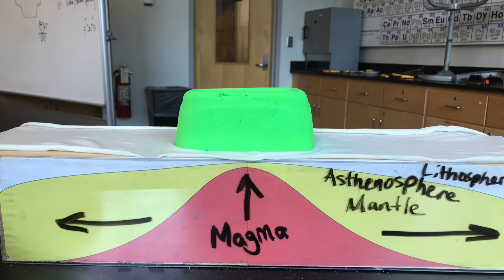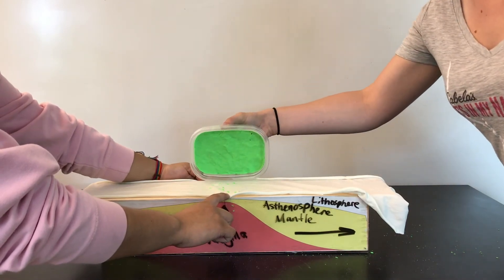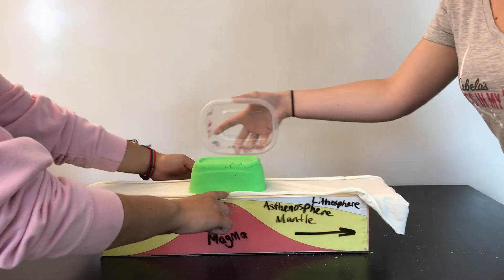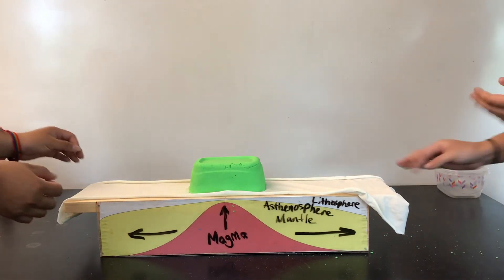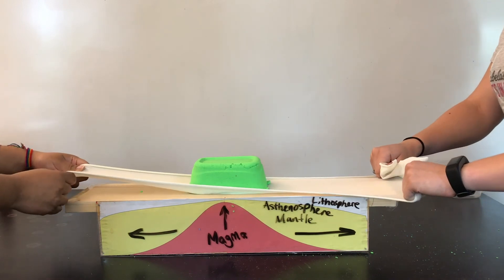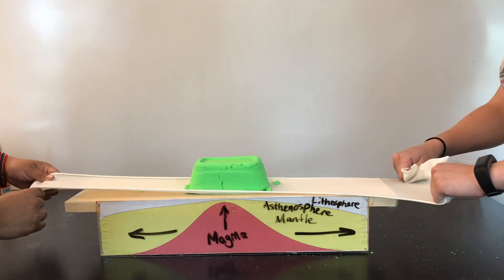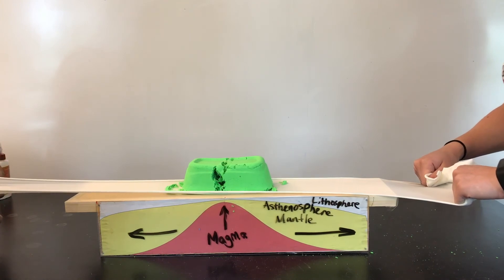Our model highlights the fact that the lithosphere is stretching and tearing as it rifts, rather than only tearing. It also shows the process as well as the result of the rift, so students are able to understand that it is a dynamic system. Along with that, our model demonstrates the Earth's layers that are involved in this process. These layers are very important to highlight because they are key to understanding why and how rifting occurs.